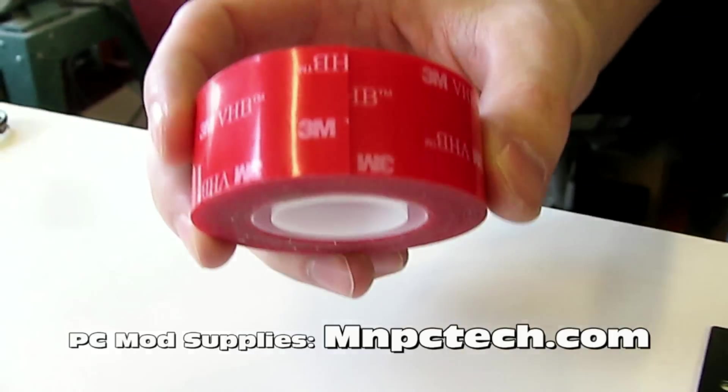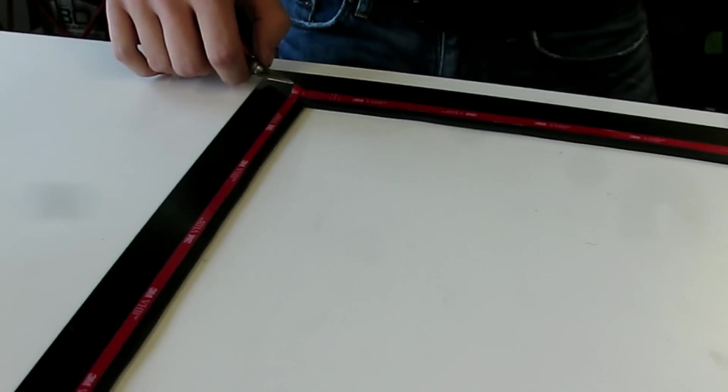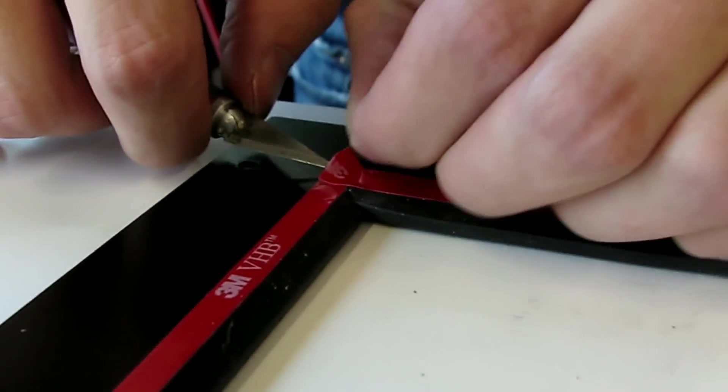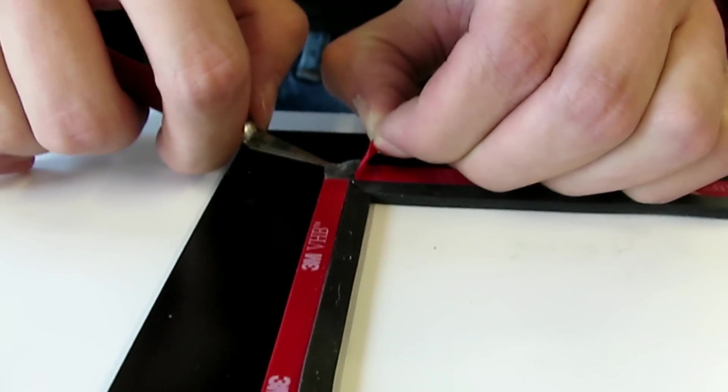We've got our U-channel installed now. The next step is to take the 4010 3M tape, which you can get from mnpctech.com, and run that along the inside edges of the side panel. What's going to hold the U-channel in place is when we adhere the acrylic window to the side panel using this tape. I didn't have to use the full half inch width of the tape, so I laid down the tape and took off half of it with the X-Acto knife. Then use the X-Acto to come under an edge of the tape and pull it up.